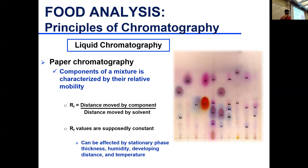One measurement used for semi-quantification is the Rf value, or relative mobility factor. You measure the distance from the start to the midpoint of your spot — the distance moved by the component — and divide by the distance from your origin line to the solvent front — the distance moved by the solvent. The Rf values can be compared to identify different components within your mixture.